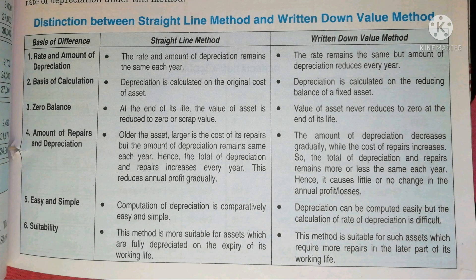The fifth difference is computation. Under the Straight Line Method, computation of depreciation is comparatively easy and simple — once you calculate the depreciation for one year, the same amount continues every year. Whereas under the Written Down Value Method, depreciation can be computed easily, but the calculation of the rate of depreciation is difficult.